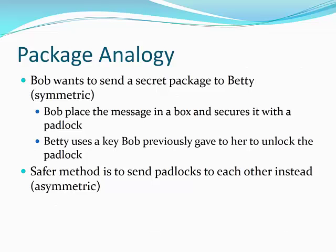Asymmetric cryptography is the safer method. Betty could instead send an open padlock to Bob while she retains the only key that can open it. Bob can use that padlock to secure the package and send it back to Betty. Now Betty can use the only available key to open the package. In this analogy, the padlock is the public key and the padlock key is the private key. The private key remains private throughout the process.